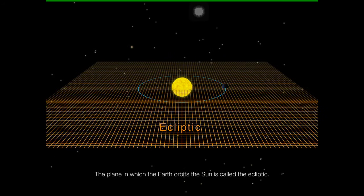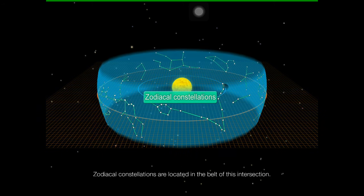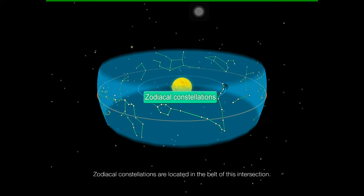The Ecliptic intersects at roughly the middle point of the celestial sphere. The circle of the Ecliptic is divided into 12 equal parts. Zodiacal Constellations are located in the belt of this intersection.